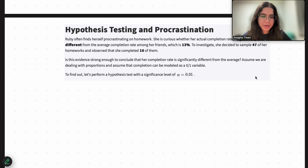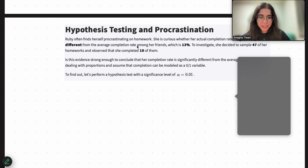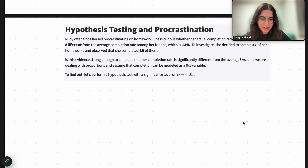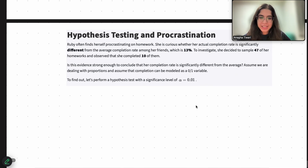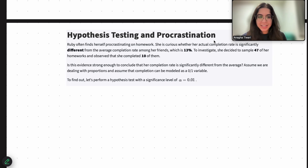Hi everyone, my name is Arangha. I'm part of the data science discovery team, and in this video today we will be doing a question on hypothesis testing and procrastination, specifically with a two-sided, one-sample z-test for means. So let's go ahead and get started.